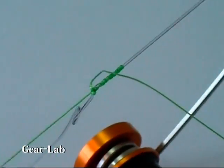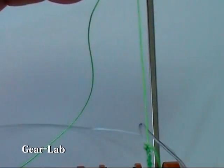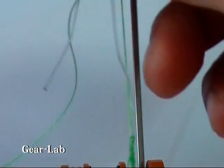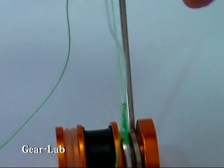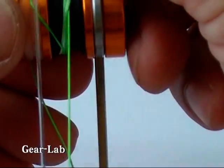Turn the easy knotter clockwise. Secure the end of the shock leader in the top O-ring.